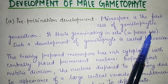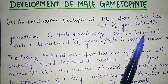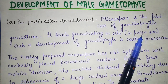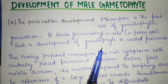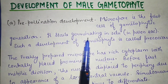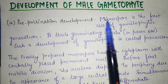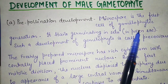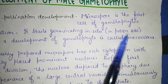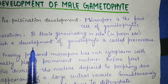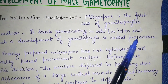The microspore that germinates is the pollen grain. The pollen grain is a partially developed microspore which represents the male gametophyte. Since the microspore starts germinating within the pollen sac, such development of the gametophyte is called precocious development.